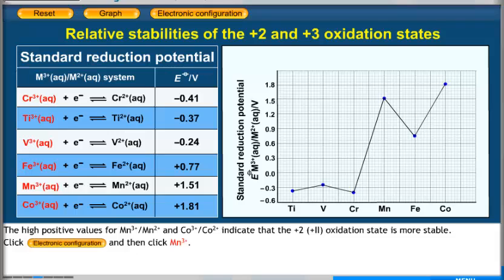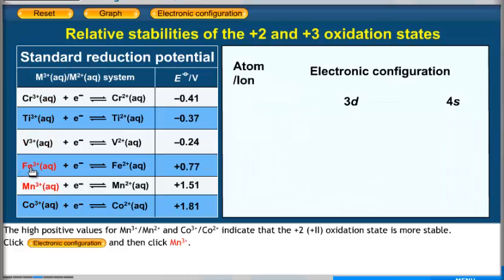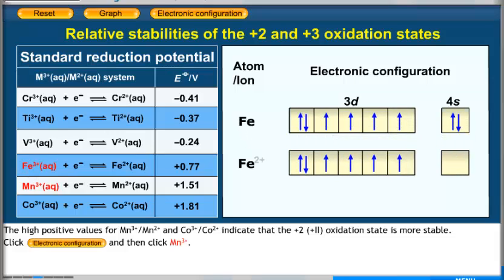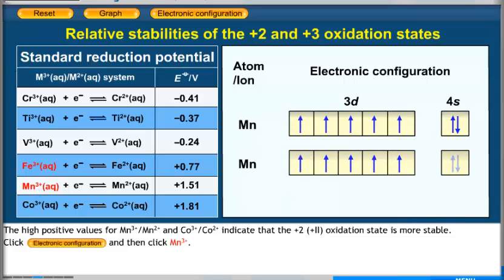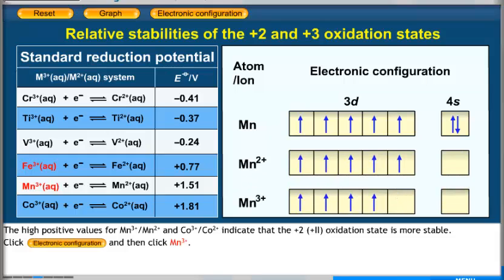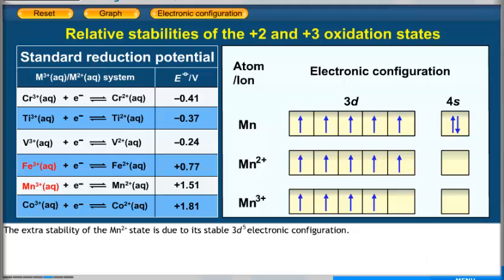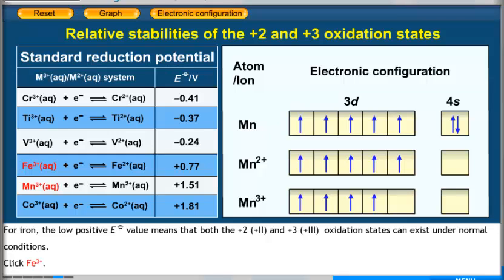The high positive values for manganese 3+/2+ and cobalt 3+/2+ indicate that the plus 2 oxidation state is more stable. The extra stability of the Mn²⁺ state is due to its stable 3d⁵ electronic configuration. For iron, the low positive E° value means that both the plus 2 and plus 3 oxidation states can exist under normal conditions.